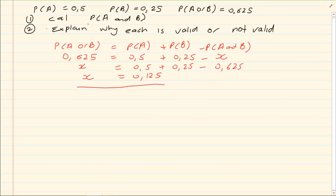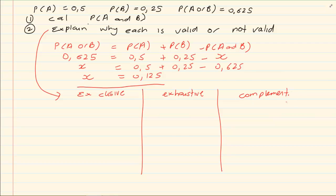When they say explain why each is valid, I am talking of is it exclusive, is it exhaustive, is it complementary? Now you must explain why each of them are valid or not valid. Exclusive says that P of A and B must be equal to 0. Therefore this event is not exclusive.